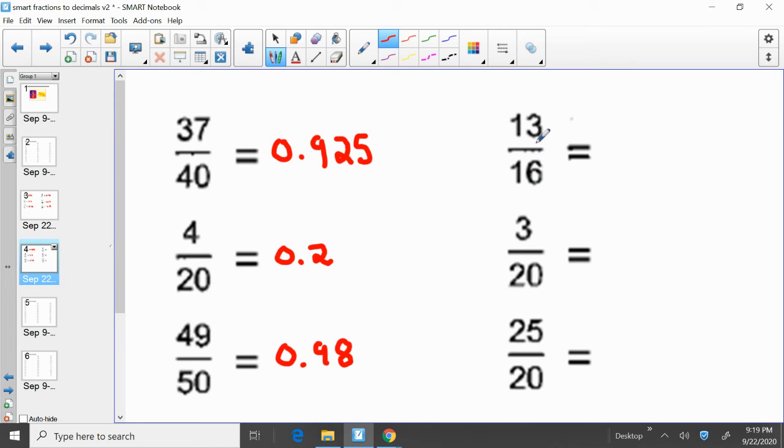Thirteen sixteenths. Thirteen over sixteen. Thirteen divided by sixteen equals. This is a bit of a longer decimal. Zero point eight one two five. So thirteen sixteenths equals zero point eight one two five.